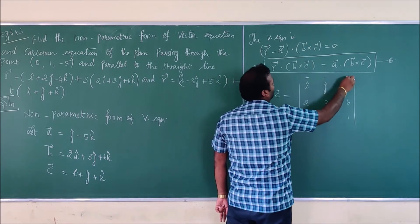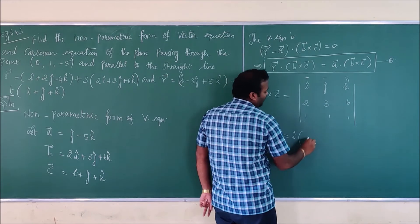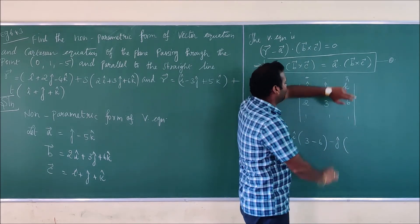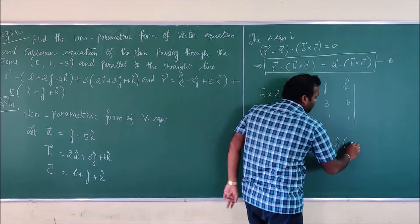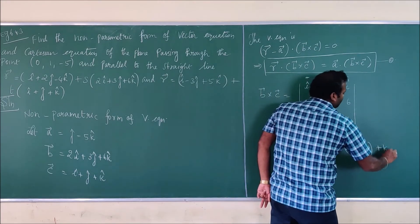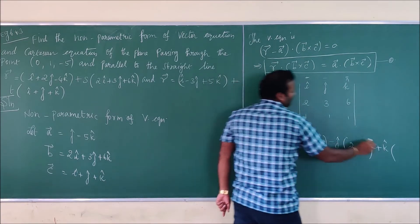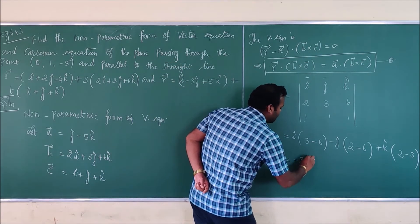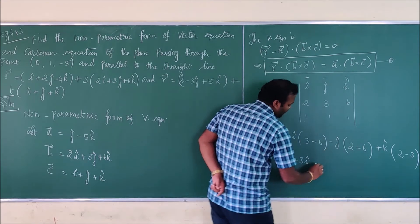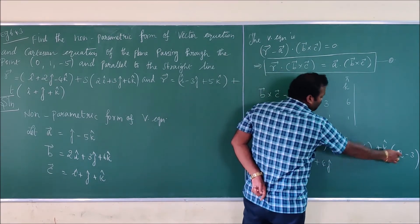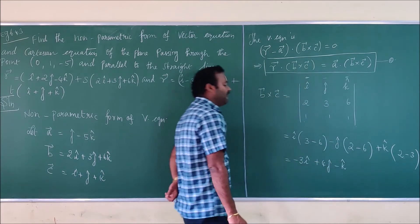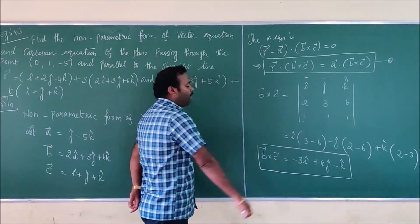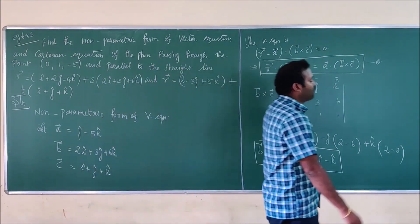Expanding the determinant: i-cap × (3·1 - 6·1) = i-cap × (3 - 6) = -3i-cap. Then minus j-cap × (2·1 - 6·1) = -j-cap × (2 - 6) = +4j-cap. Then k-cap × (2·1 - 3·1) = k-cap × (2 - 3) = -k-cap. So b-vector × c-vector = -3i-cap + 4j-cap - k-cap.